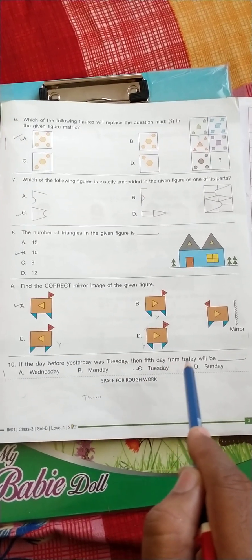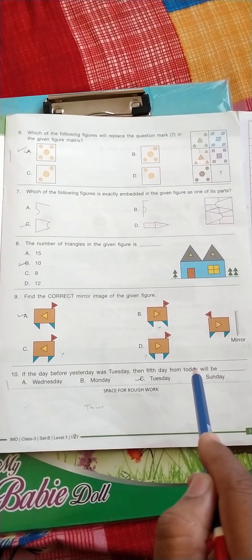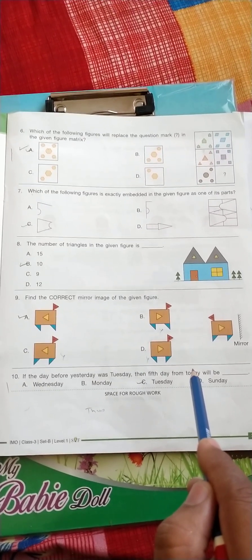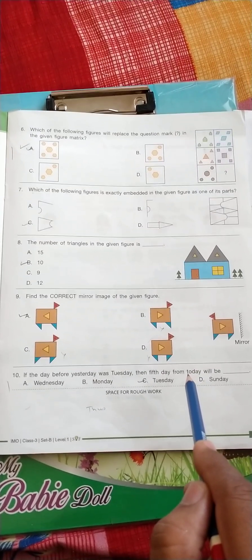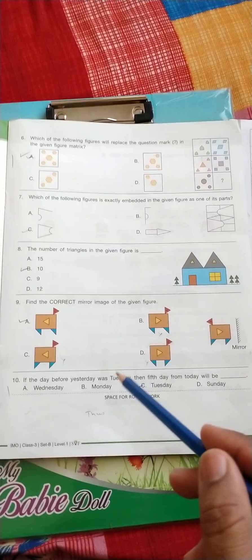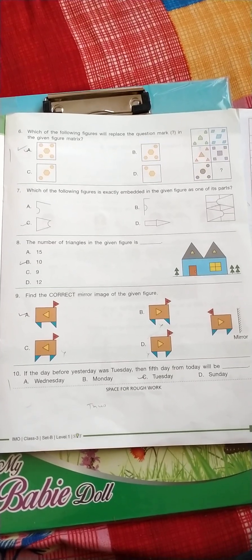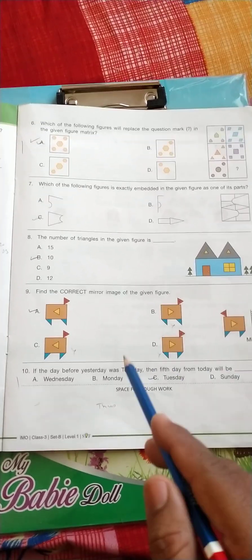Question number 10: if the day before yesterday was Tuesday, then fifth day from today will be - it means day before is Tuesday, it means yesterday is Wednesday, and today is Thursday. So count from Thursday fifth day: Thursday, Friday, Saturday, Sunday, Monday, Tuesday, so the correct answer is C.